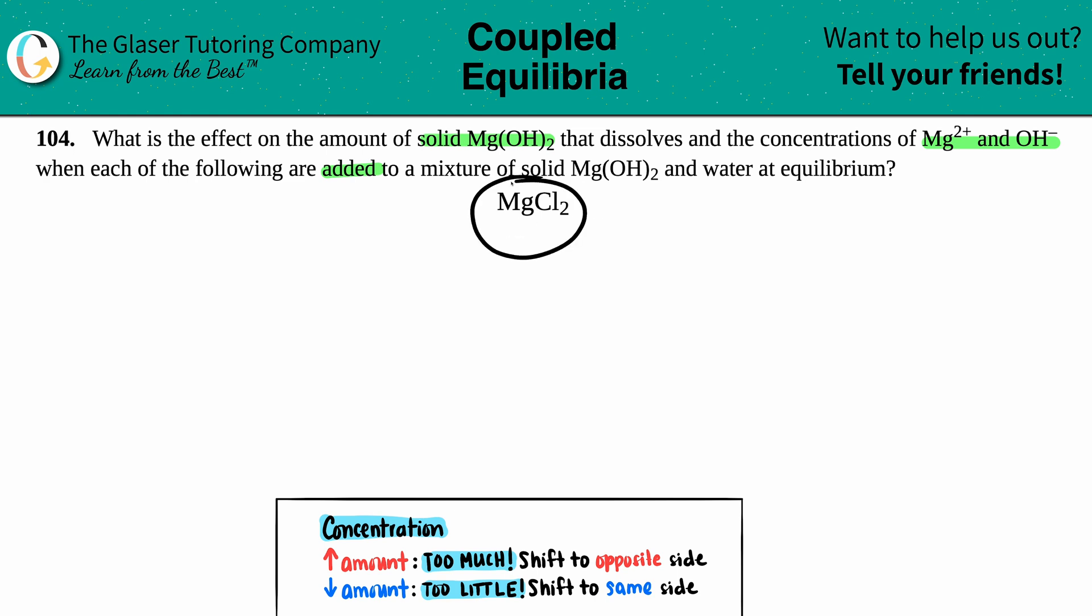So what's going to happen to Mg(OH)2, Mg2+, and OH- when MgCl2 is added? Well, first let's write the equation.